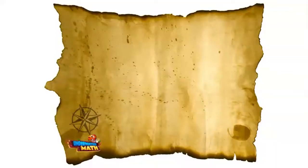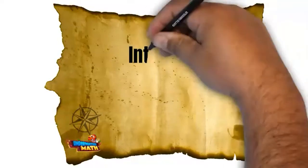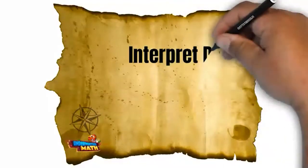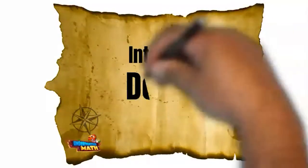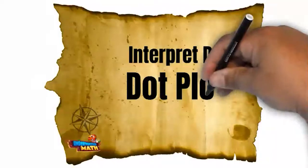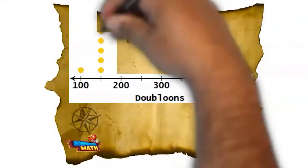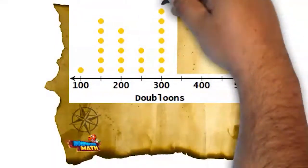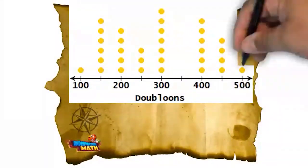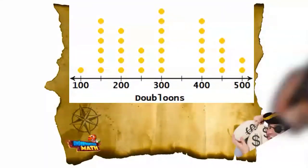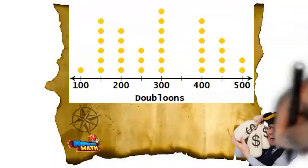Ahoy mateys and welcome back to Underwater Math! Today we will be plundering the archives for information on interpreting data from dot plots. This dot plot shows how many doubloons were in each of the 34 treasures I have buried.